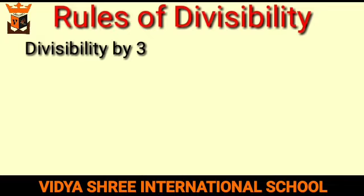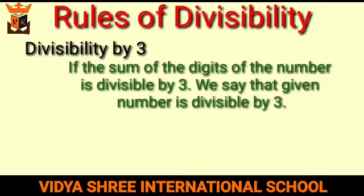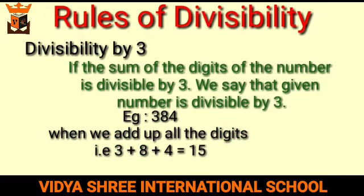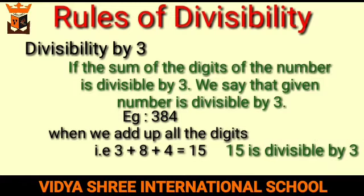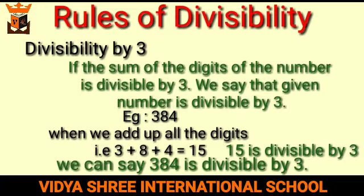The next rule is divisibility by 3. If the sum of the digits of the number is divisible by 3, we say that the given number is divisible by 3. For example, 384 — when we add up all the digits, that is 3 + 8 + 4, we get the sum as 15. And we know that 15 is divisible by 3, so we can say 384 is divisible by 3.